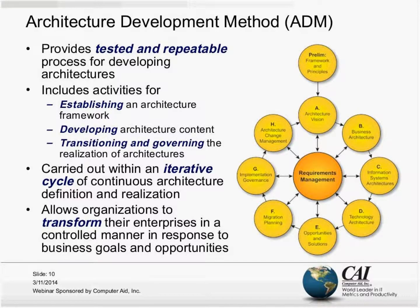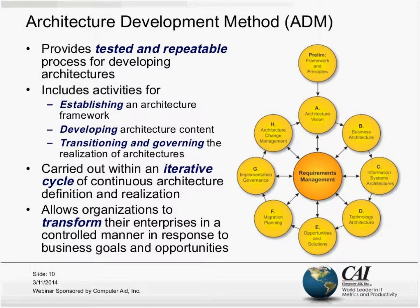In Phases E and F we look at the results of architecture description and requirements gathering, and put together a plan for how we're going to realize the target architecture. Once Phase F is completed, we're done with what we call the 'big EA' — that capital-EA, top-down, deliberate, intentional process — and we transition into the solution delivery life cycle. Enterprise architecture then provides guidance and compliance reviews through that life cycle — that's the whole idea behind Phase G, Implementation Governance.